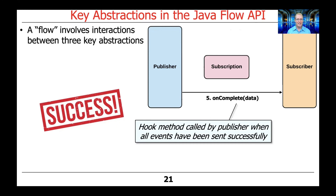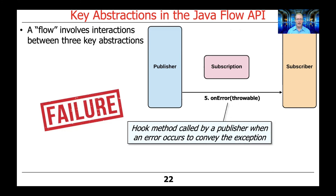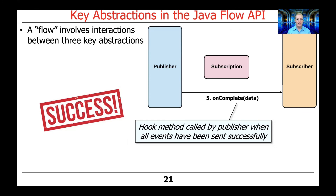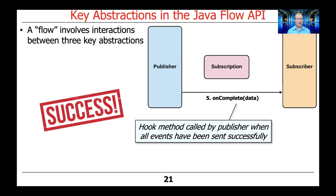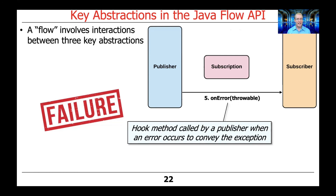Being an old Unix programmer, I kind of think about on-complete as sort of like the old Unix end-of-file marker that says: I've finished transmitting my stream of data to you and now you can clean up or do whatever you need to do after the stream of data has been sent. There's also another hook method that can be sent, which is on-error, called by a publisher to indicate when an error has occurred. There can be zero or more on-next event invocations; if everything goes well, there'll be one on-completion event notification; and if something goes wrong, there'll be one on-error notification. These are mutually exclusive — you don't have both on-complete and on-error, you have one or the other.